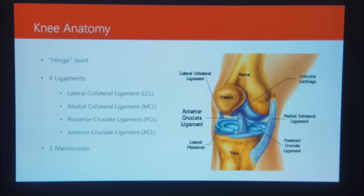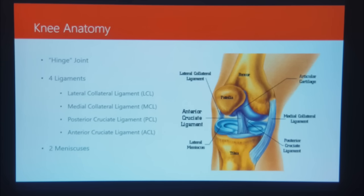Besides the four ligaments, there are also two meniscuses — the medial and lateral meniscus. First and foremost, these add cushion to the knee joint and prevent that bone-on-bone action when we're landing, running, and sprinting. Their main role is basically shock absorption. Secondly, they also add a little depth to the knee joint — you can see they're kind of a horseshoe shape — so they cup the femur inside the knee joint and add a little more stability. And of course on the front there we have the patella, which also has a tendon running from the femur down to the tibia, adding stability to that joint as well.